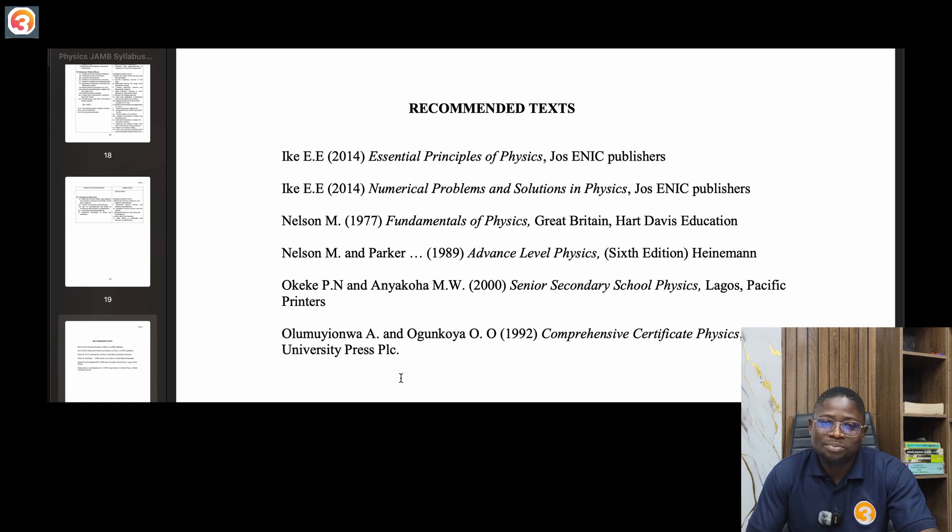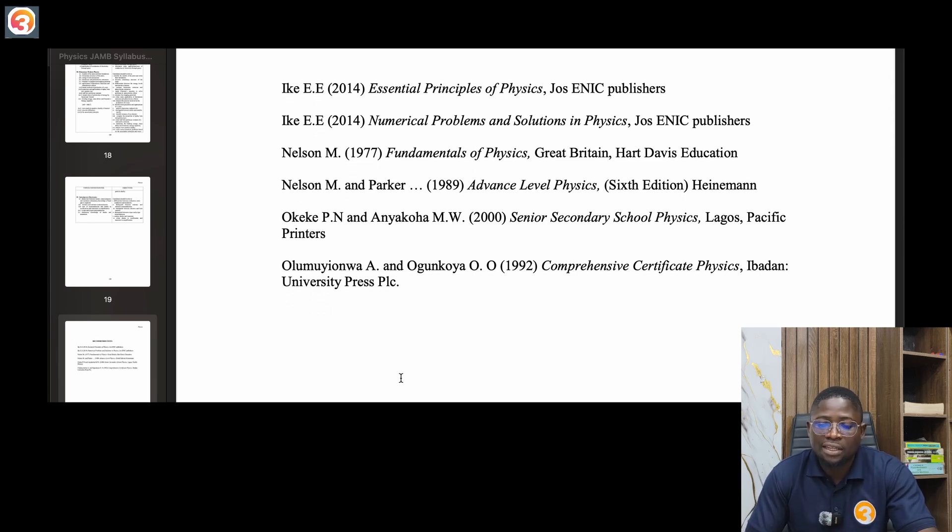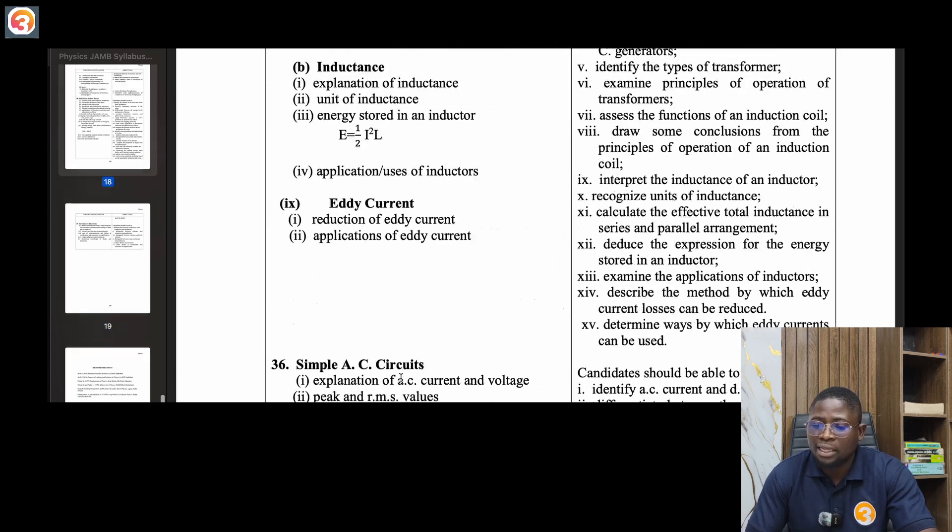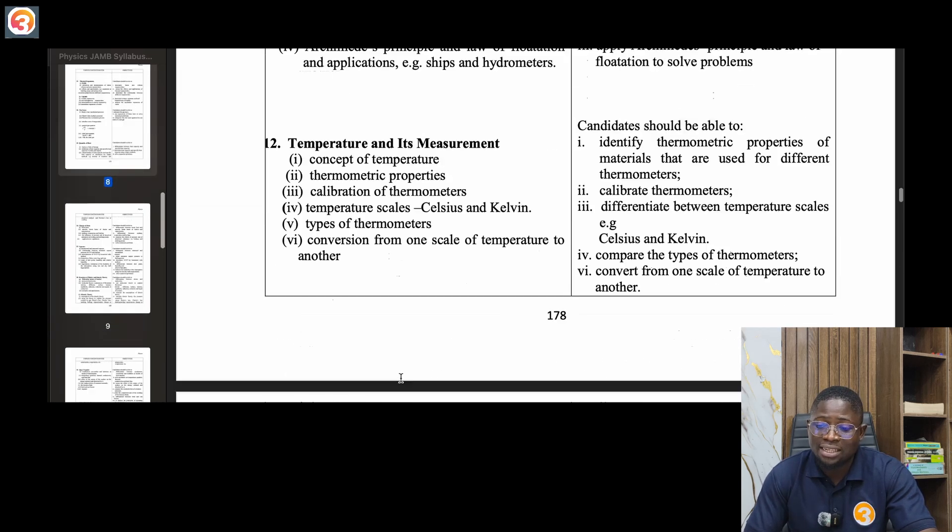Recommended texts. You can use Essential Principles of Physics, any good physics textbooks you have. You can use the OT School JAM app. There are lecture notes on the app also, already structured according to this syllabus for you. You can download the application, activate it. All the materials on the app, mock exams, everything you need to succeed, we put them inside the app for you to succeed. You can use Essential Principles of Physics, Numerical Problems and Solutions in Physics, Fundamentals of Physics, Advanced Level Physics, Senior Secondary School Physics, Comprehensive Certificate Physics.